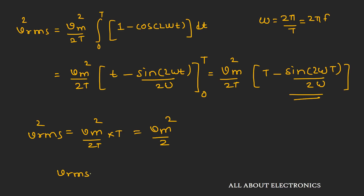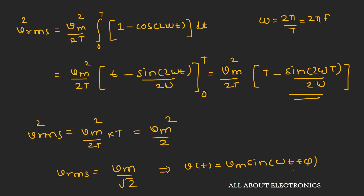So for a sinusoidal signal, the RMS value will be Vm/√2. This RMS value does not depend upon the phase of the given AC signal. So suppose if we have a signal V = Vm sin(ωt + φ) and we find the RMS value, we will get the same result.